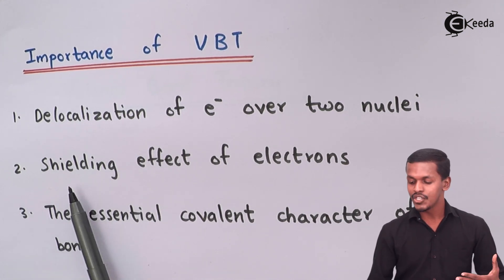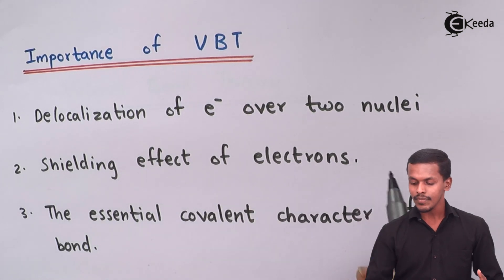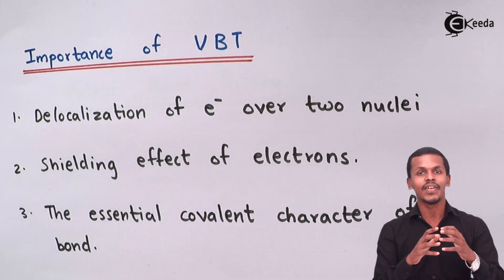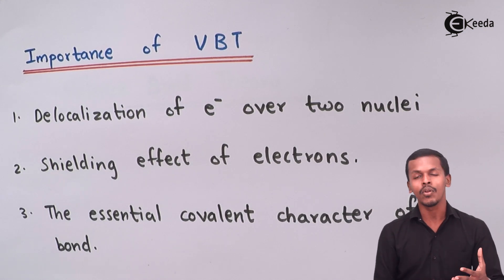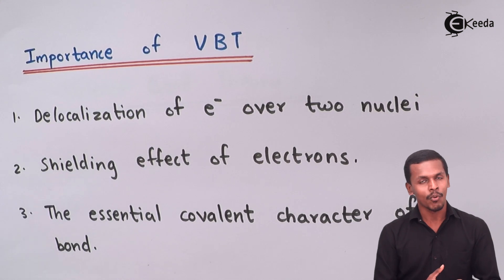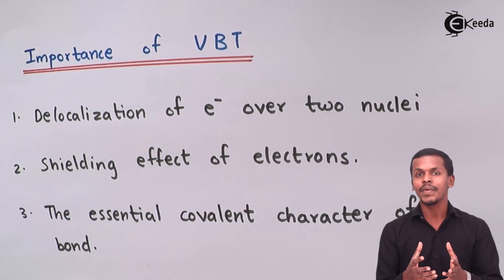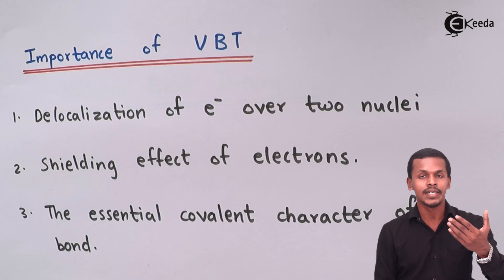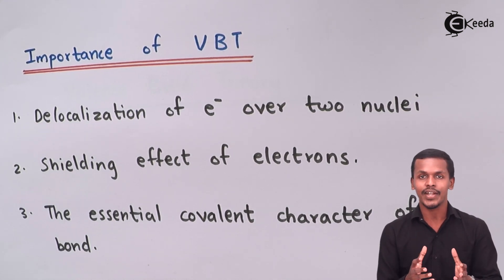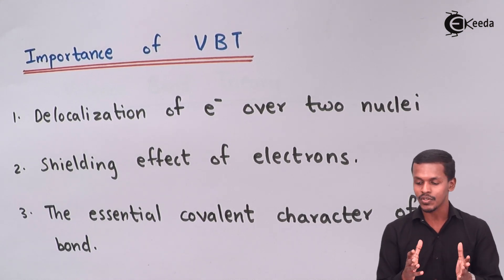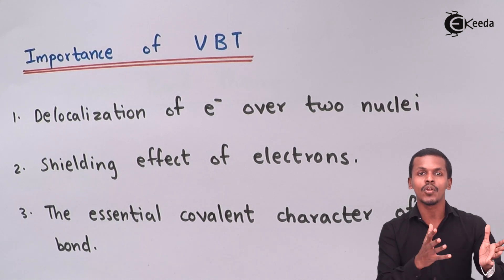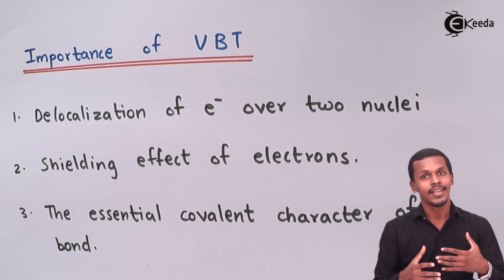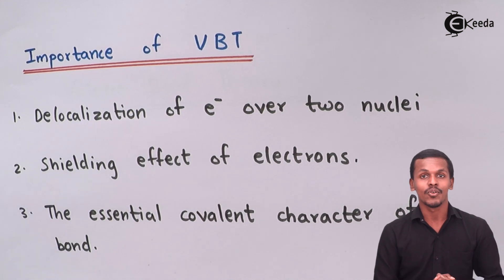The next importance is the shielding effect of electrons. Electrons revolve around the nucleus, and the outermost shell is the source of valence electrons that play a vital role in bond formation. Meanwhile, the inner electrons play a very important role in shielding the nucleus from attraction towards the outermost electrons. This shielding effect also helps us understand which atom would be more or less electronegative.